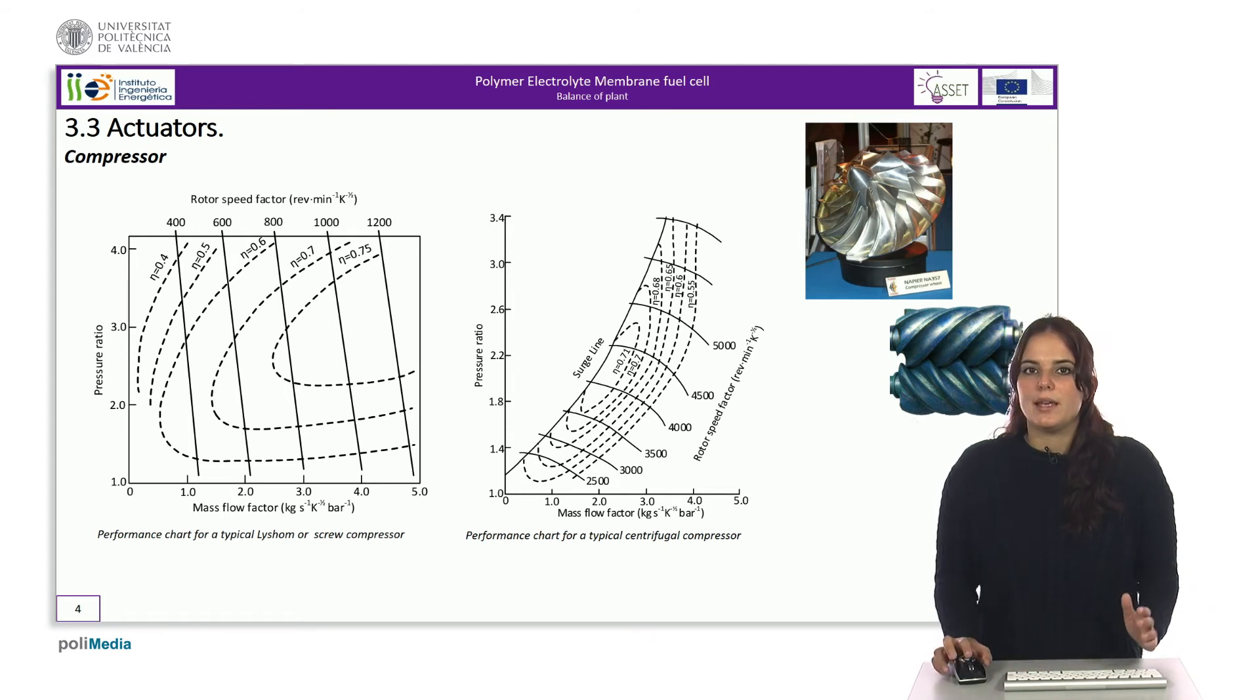In each of the graphs, the lines connecting the points with equal performance are shown. From the operating condition of the compressor, the parameters of the graph are determined. In this way, we find the performance curve in which it is operating.